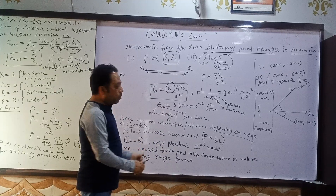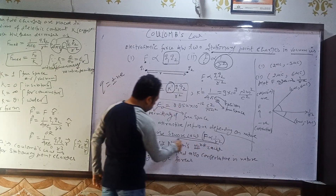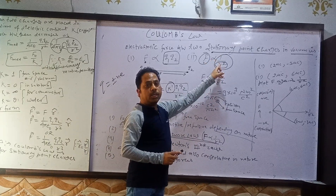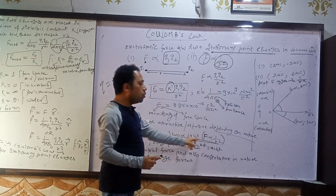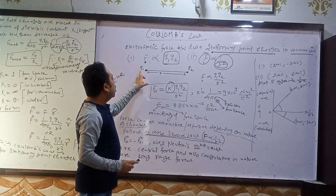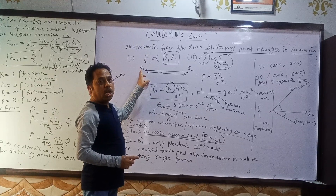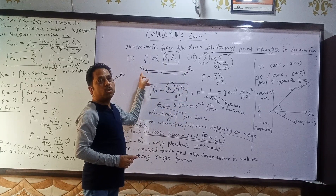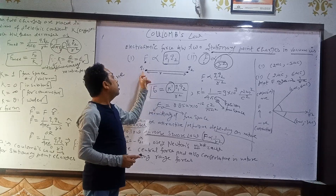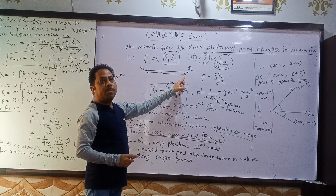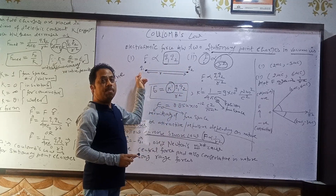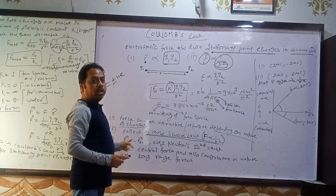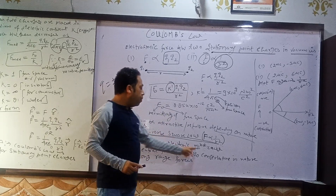Second, the electrostatic force follows inverse square law - F is inversely proportional to R square. Third, whatever force the first charge imparts on the second, the second will also impart the same force on the first but in opposite direction. That is, the force of 1 on 2 is the same magnitude as the force of 2 on 1 but direction is opposite, and that is why we put a negative sign: F₁₂ = -F₂₁.